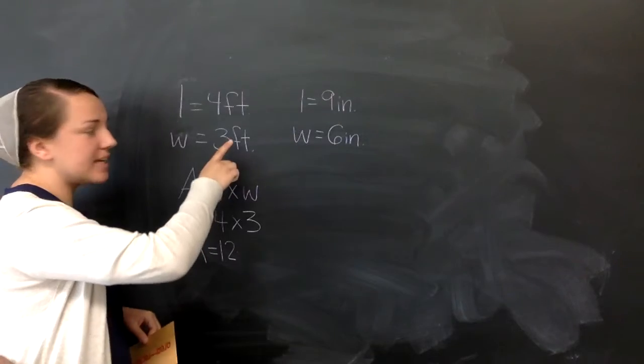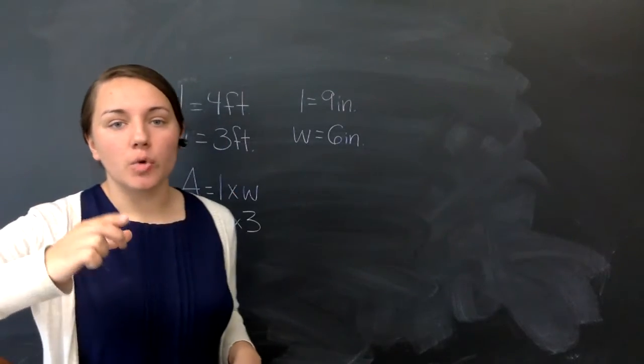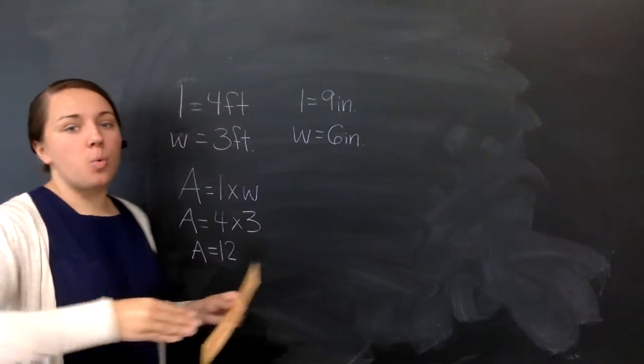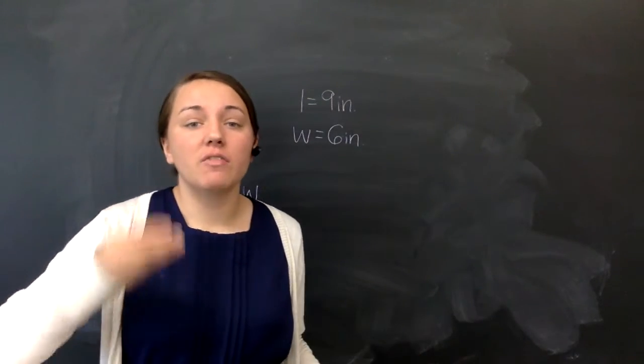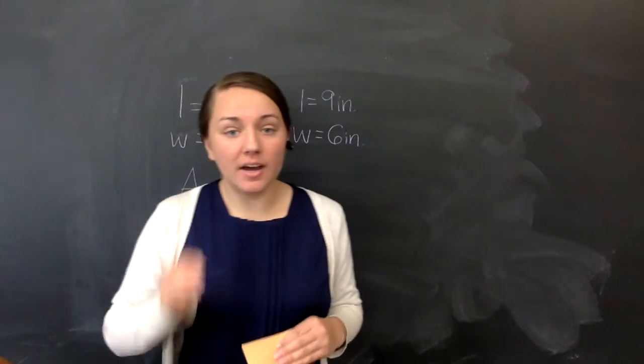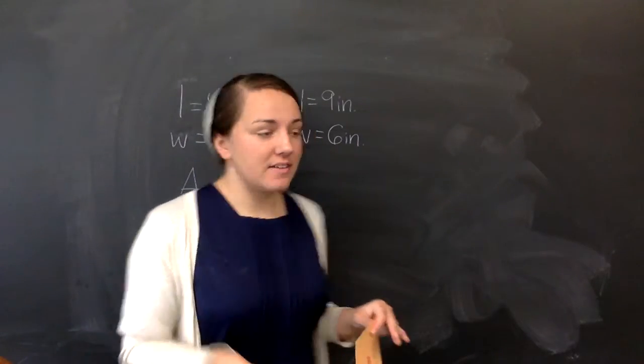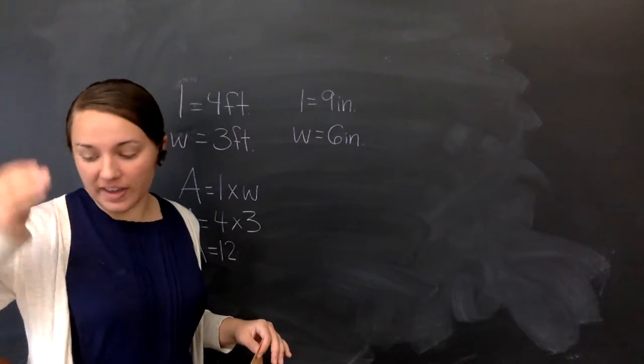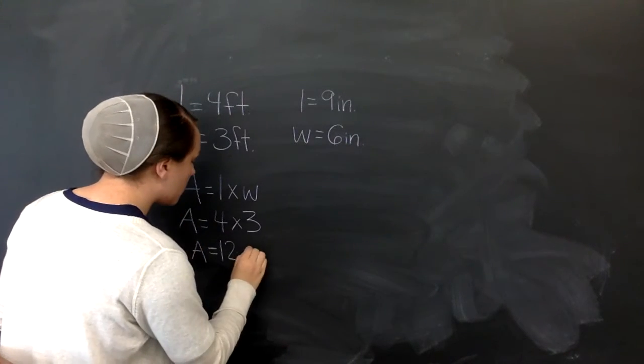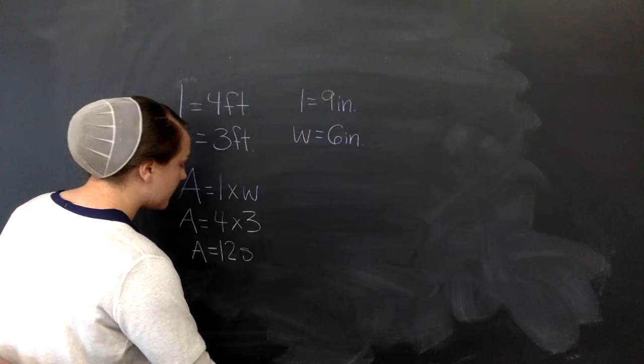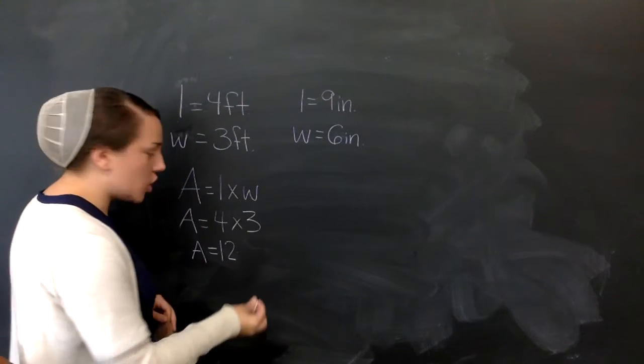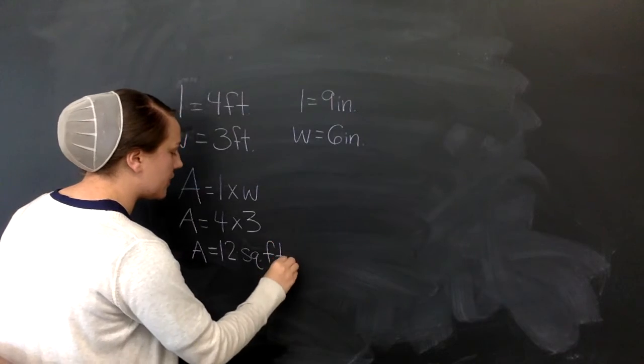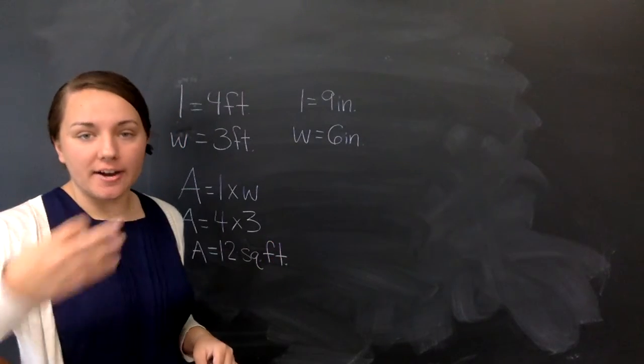Now our unit is feet. But remember, we're not just measuring length. So our answer is not just 12 feet long. It's 12 square feet. Because when we measure area, we're measuring squares inside of something. So you have to make sure that you write square feet in your answer. And a shorter way than writing the whole word square is to just write SQ dot, and then whatever your unit is. So 12 square feet.